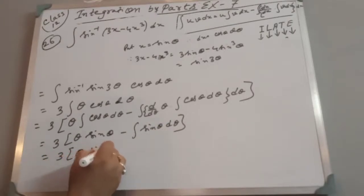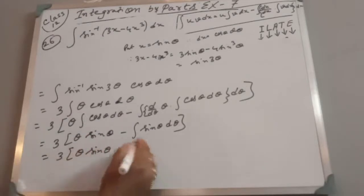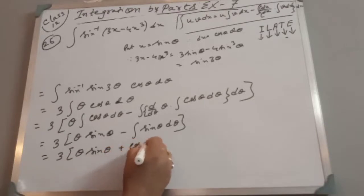So: 3[θ sin θ − ∫sin θ dθ]. We know ∫sin θ dθ = −cos θ. Therefore: 3[θ sin θ − (−cos θ)] = 3[θ sin θ + cos θ].